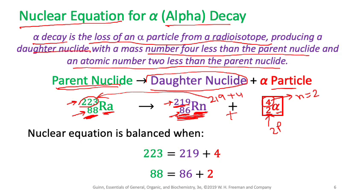In a nuclear equation, you always write the original nucleus, the new nucleus, and the radiation emitted. Here: Ra (mass 223, atomic 88) → Rn (mass 219, atomic 86) + alpha particle (mass 4, atomic 2). The sum of the mass numbers and the sum of the atomic numbers must each be equal on both sides.